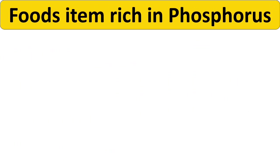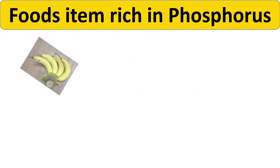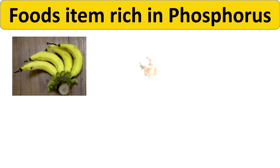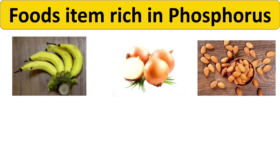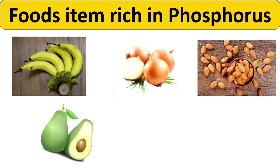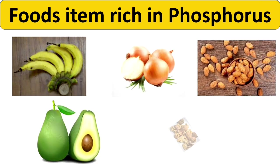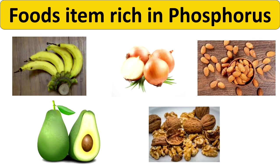Now see the food items that are rich in phosphorus: bananas, onions, almonds, avocado, and walnut. If you take these foods that are rich in calcium and phosphorus, your teeth and gums will become healthy.